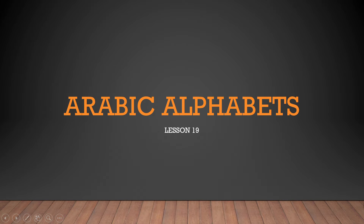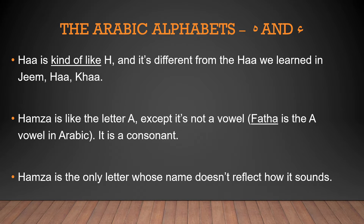Assalamu alaikum warahmatullahi wabarakatuh. Today we will be doing lesson number 19 of Arabic alphabet class. We will be doing the next two Arabic alphabets — these are the last of the Arabic alphabets, so after this you don't have any other Arabic alphabets left. The first one is Ha and then the second one is Hamza.